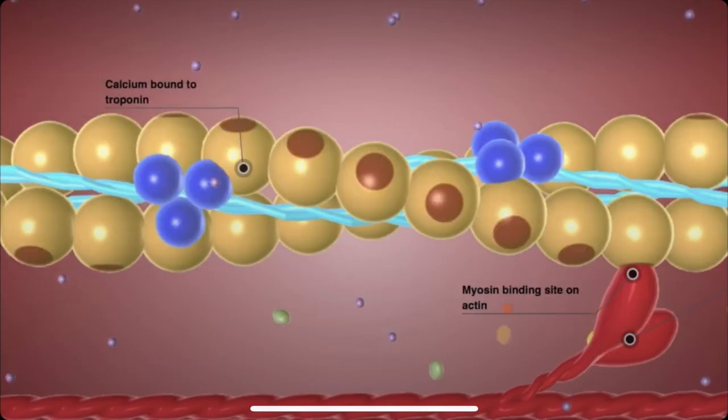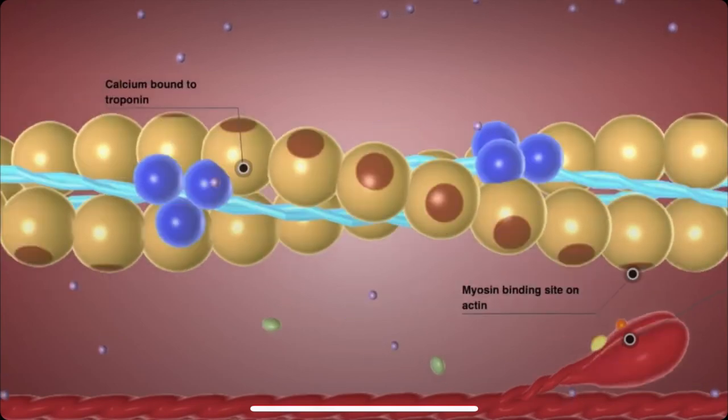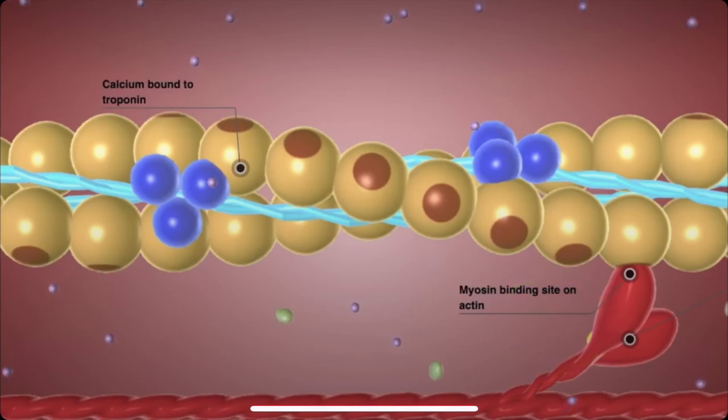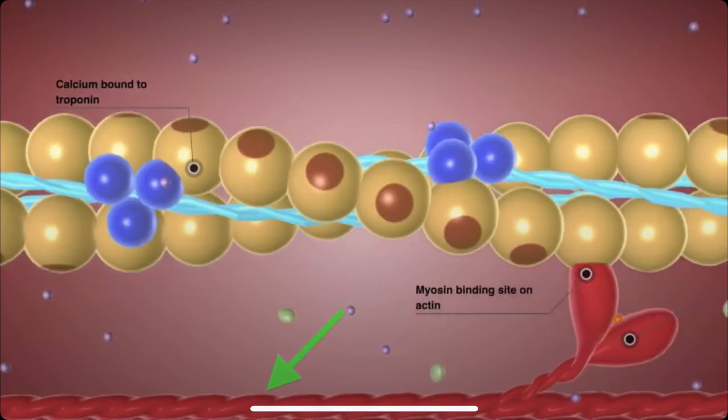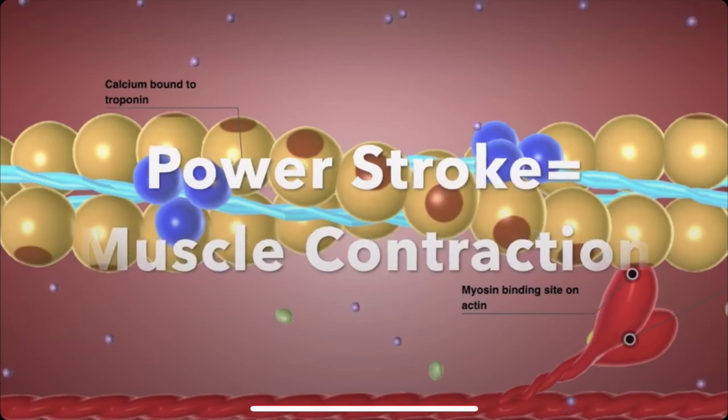After this crossbridge forms, the myosin head rotates towards the center of the sarcomere. As that rotation occurs, the myosin releases its adenosine diphosphate and phosphate, sliding the thin actin filament past the thick myosin filament. This creates the power stroke and the muscle contraction.